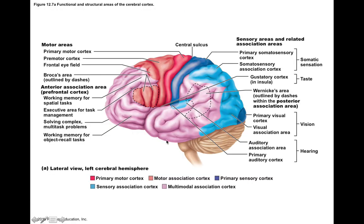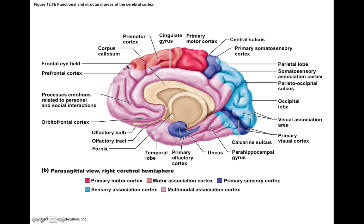To summarize the cortex: the frontal lobe contains the precentral gyrus (primary motor cortex), the premotor cortex for planning motor movements, Broca's area for motor speech, and the prefrontal cortex for higher-order functions like morality and judgment. The parietal lobe has the primary somatosensory cortex for touch and Wernicke's area for sensations of verbal and written words. The temporal lobes contain the olfactory cortex and auditory cortex. The occipital lobes contain the primary visual cortex and visual association area. A cross-sectional view of the cerebral hemisphere also reveals the olfactory cortex located deeper in the temporal lobes.